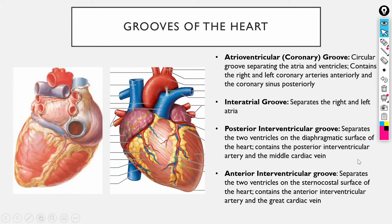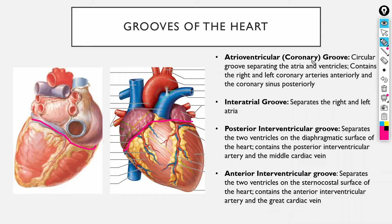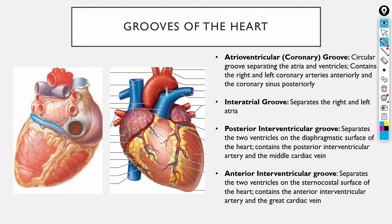Moving on to the grooves of the heart — there are four. The atrioventricular groove, from its name, splits between the atria and the ventricles, running anteriorly and posteriorly. It contains the coronary vessels: the right coronary artery comes out one way, the left coronary artery the other, and on the back side there is a large vein called the coronary sinus.